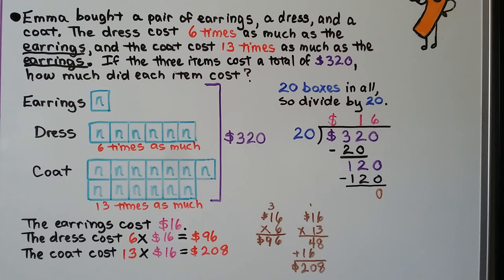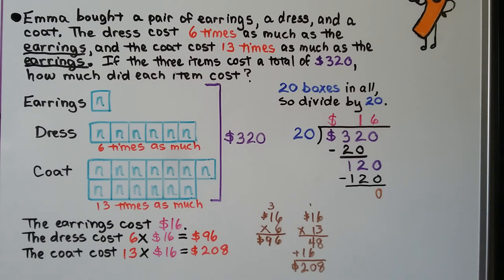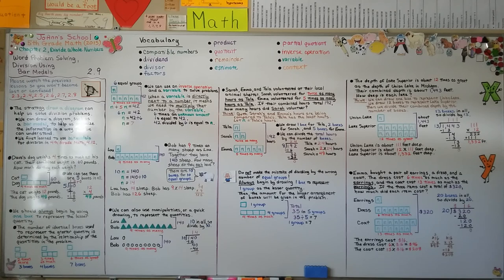It's very important to see what we were comparing them to. Both the dress and the coat were being compared to the earrings as more — six times more or 13 times more. So we knew the earrings were the lesser amount and that was going to be our one box. The most important thing to remember is to not make the mistake of dividing by the wrong number of equal groups. We should always begin by using one box to represent the lesser quantity. We're going to move on to chapter three, adding and subtracting decimals. Stay safe, stay strong. Bye.